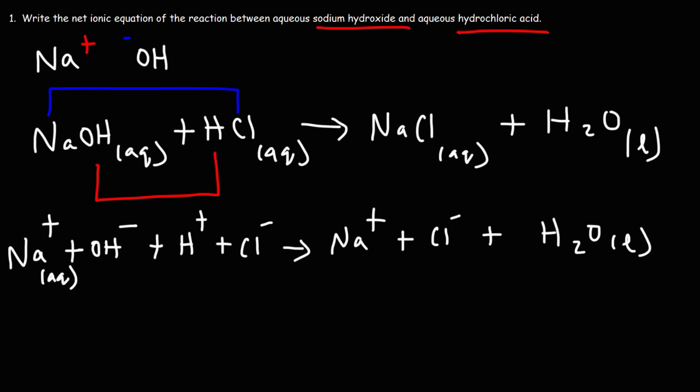Now, what do we do at this point? What is our next step here? Before we can write the net ionic equation, we need to identify what is known as the spectator ions. Now, you might be wondering, what are spectator ions?